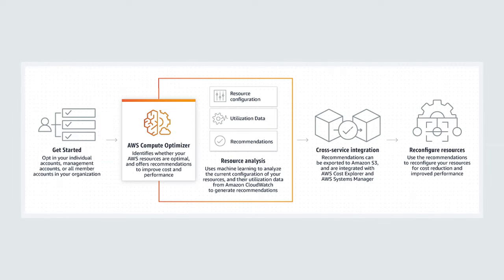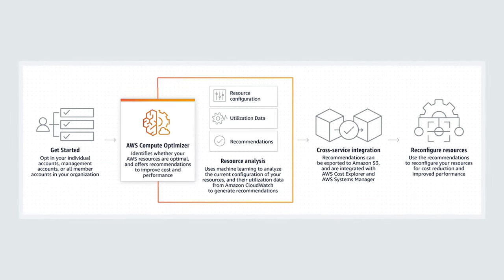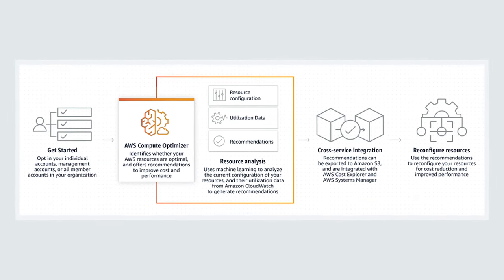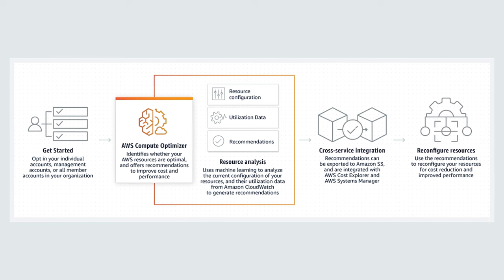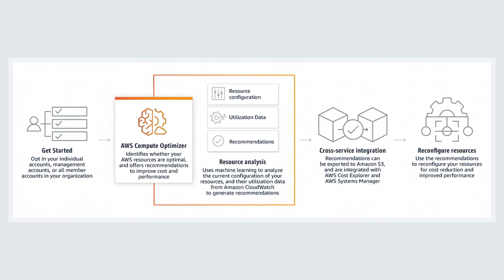AWS Compute Optimizer helps you reduce costs by continuously monitoring EC2 instances, EBS volumes, and Lambda functions to help you find ways to reduce costs and improve performance.